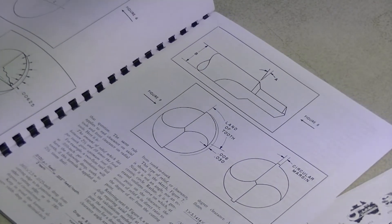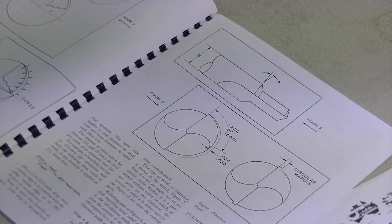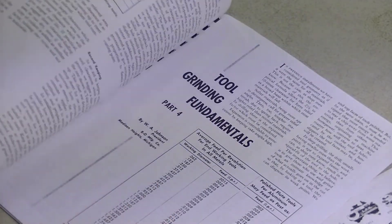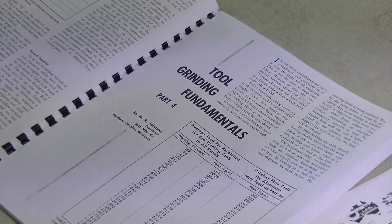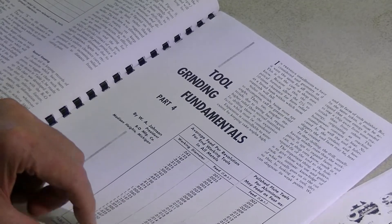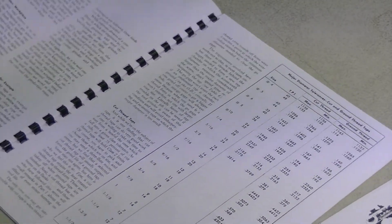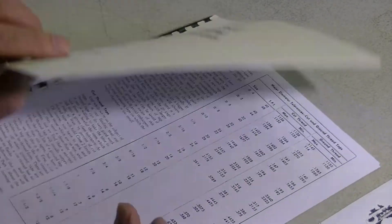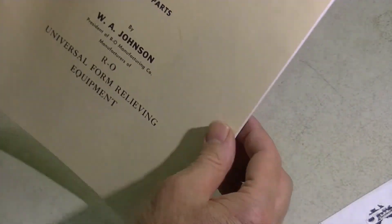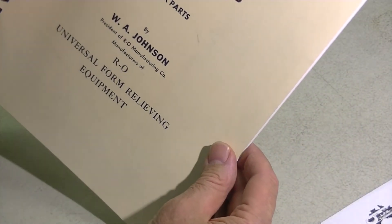Here they explain the difference between axial and radial relief and peripheral relief. Making step drills, and a lot about feeds and speeds. So if you want to learn a little bit about the manufacture of cutting tools, Tool Grinding Fundamentals by Royal Oak.